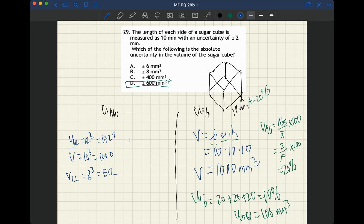And so then the absolute uncertainty is the max minus the min over 2. So that gives us 1728 minus 512 over 2, which works out to be about 1216 over 2, which is 608. So that gives us about 606 cubic millimeters.